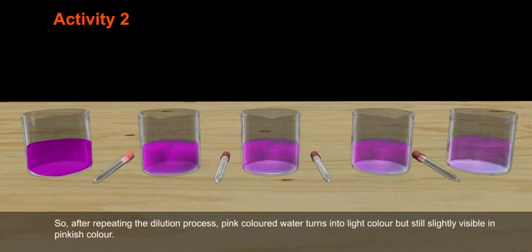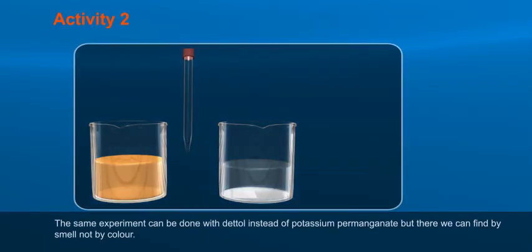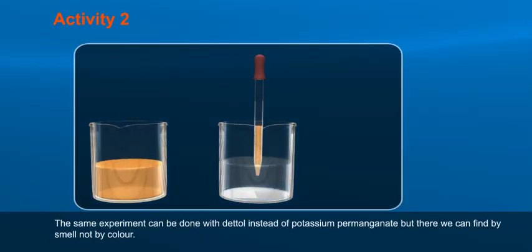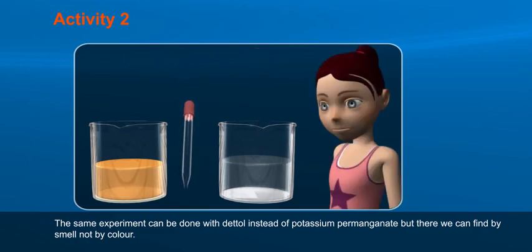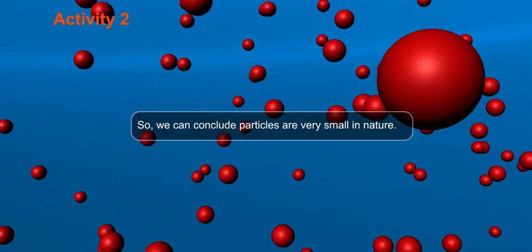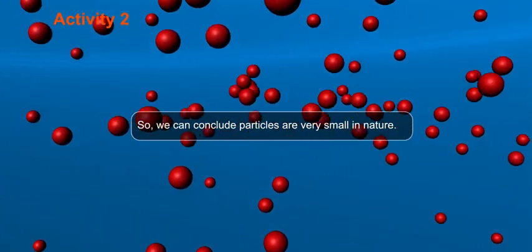So, after repeating the dilution process, pink colored water turns into light color but still slightly visible in pinkish color. The same experiment can be done with Dettol instead of potassium permanganate but there, we can find by smell not by color. So, we can conclude particles are very small in nature.